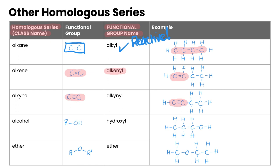Moving on, we have alcohols. Alcohols have some kind of carbon chain and their functional group is an OH group attached to the carbon chain. The R here just means any alkyl group — it could be any kind of carbon chain. The functional group name is called hydroxyl. OH represents a hydrogen and an oxygen, which is where hydroxyl comes from, and you can see that OH in our example. So this compound would be an alcohol.